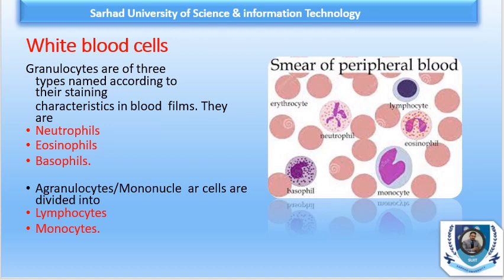When understanding the differential leukocyte count, it is compulsory that you know the morphology of the different types of cells. Normally we have neutrophils, eosinophils, basophils, and two agranulocytes: lymphocytes and monocytes. These are the different types of cells normally present in a peripheral blood smear, and we count them and report results as a percentage.